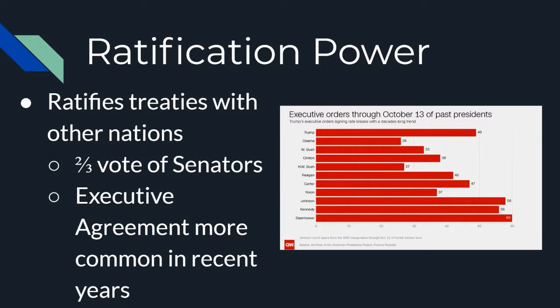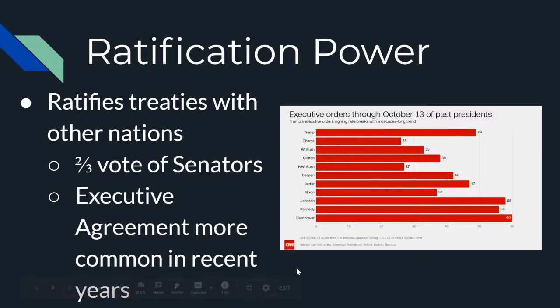Congress also has ratification power — the power to ratify treaties with other nations, requiring a two-thirds vote of senators. If the president seeks to make a treaty with another nation, he must get Senate approval through that two-thirds vote. In more recent years, executive agreements have become more common. Unlike executive orders which deal mostly with domestic policy, executive agreements are sort of like unofficial treaties that don't require a Senate vote — increasingly common because of party differences between presidents and the Senate.